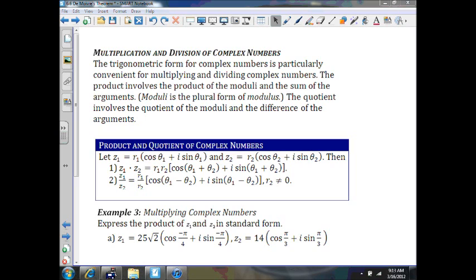The product involves the product of the moduli, which is the plural form of modulus, and the sum of the arguments. The quotient involves the quotient of the moduli and the difference of the arguments. Remember, if you're multiplying, you're going to add the angles or the angle measures. If you're dividing, you're going to subtract the angle measures. It's really pretty simple.